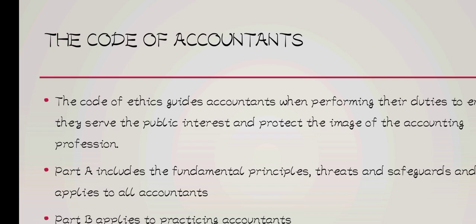The code identifies the fundamental principles of ethical behavior of accountants — how accountants are supposed to behave. It also looks at the potential threats to ethical behavior, what may limit accountants from behaving the way they are supposed to. And it provides the safeguards to those threats — how accountants can protect themselves from them.